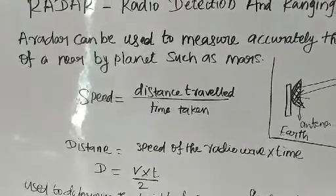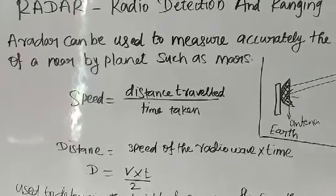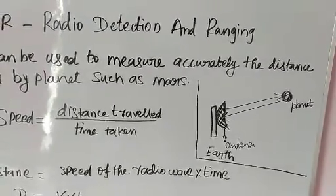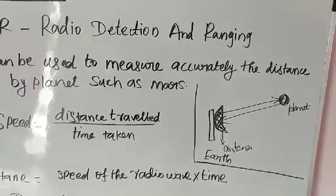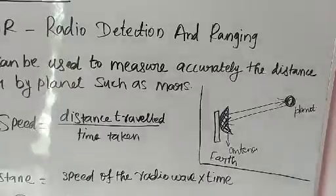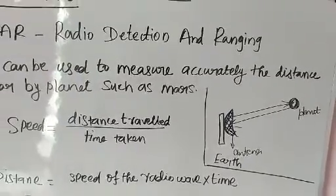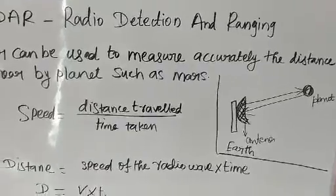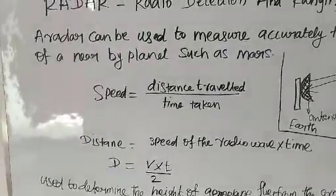Why are we dividing by 2? Here t is the time for the radio waves covering transmission and receiving, forward and reverse. That's why we divide this equation by 2.